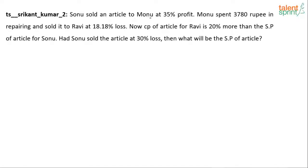Sonu sold an article to Monu at 35% profit. Monu spent Rs. 3780 in repairing and sold it to Ravi at 18.18% loss. Now the cost price of the article for Ravi is 20% more than the selling price of the article for Sonu. Had Sonu sold the article at 30% loss, then what would be the selling price of the article?